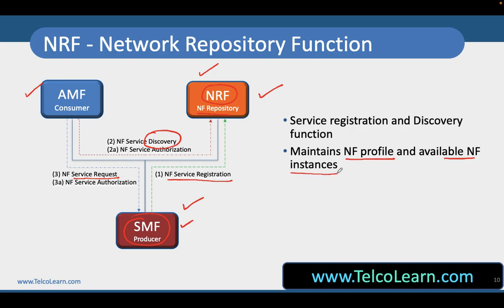So every producer — every network function which acts like a producer — when it comes up, it has to connect to the NRF and publish its information in the NRF.